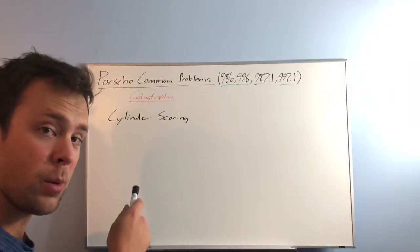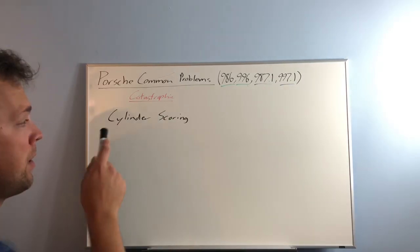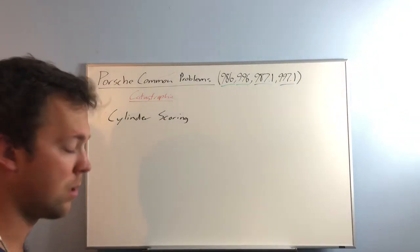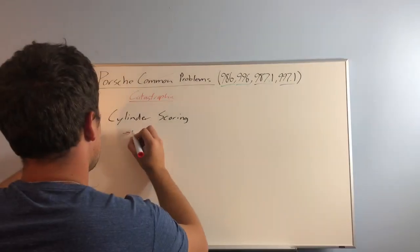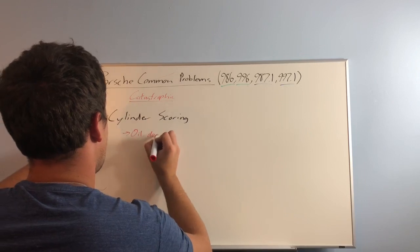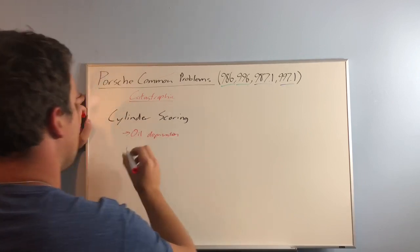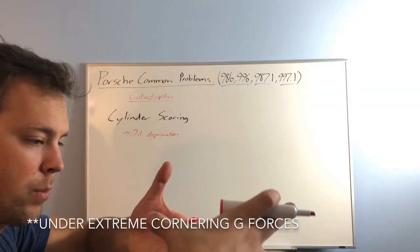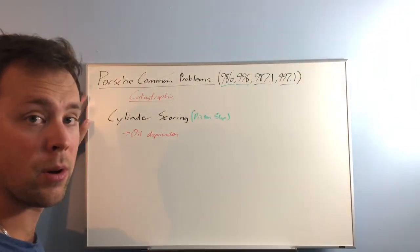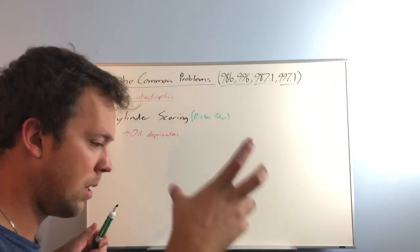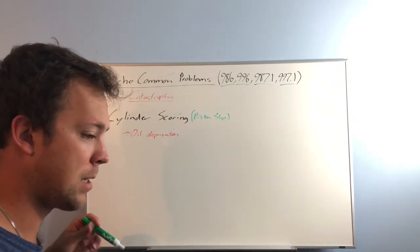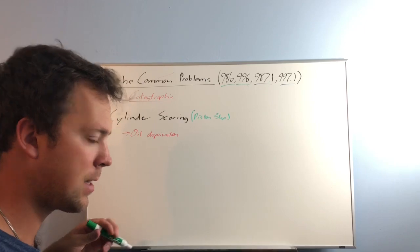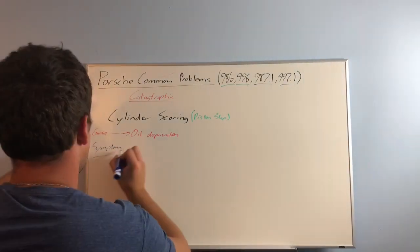Second catastrophic problem that's known for the M96 and M97 engine is cylinder scoring. If you track your car, this can lead to oil deprivation in the corners and all the oil sloshes away from your oil pickup. Piston slap, you'll hear people call it that because you can hear the piston moving up and down the cylinder. And it sounds like a ticking noise, like tick tick tick tick. So symptom. It's the piston slap sound.